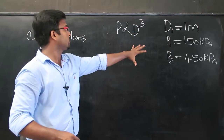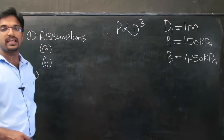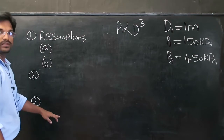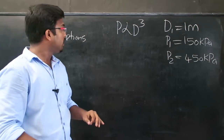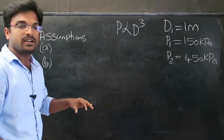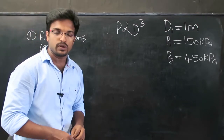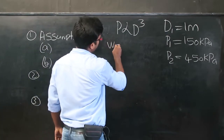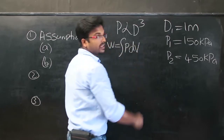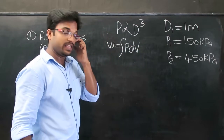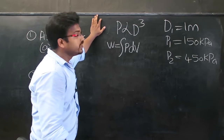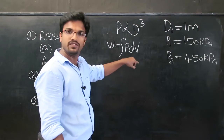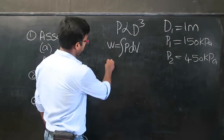Next, we write down the given data and what we need to find. We need to find the expansion work in this process. The expansion work is given by W = ∫P dV. To use this equation, we need to know how P is related to V so that we can integrate.